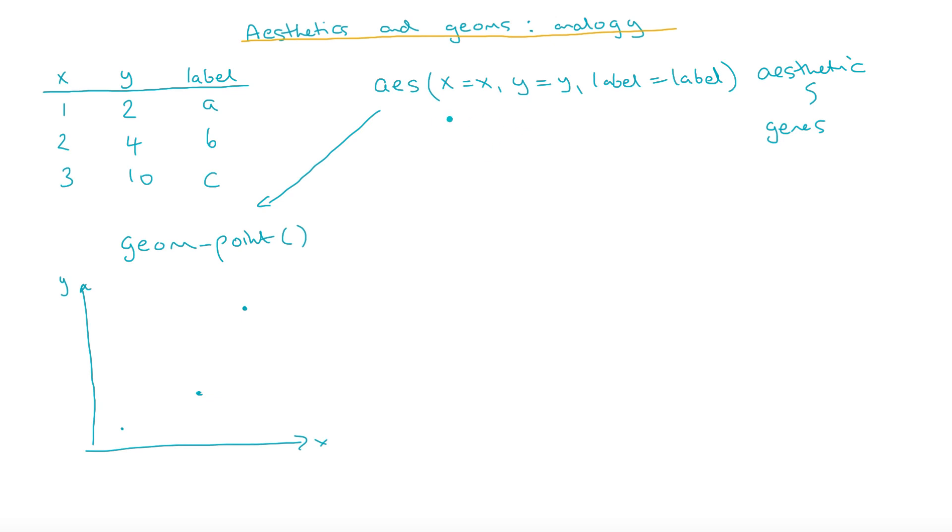If instead I used geom text, then what I ended up with is a similar thing. So I've got the same axes as I have before, X and Y, but my points are now being labeled. So I've got A, B, and C that are here.